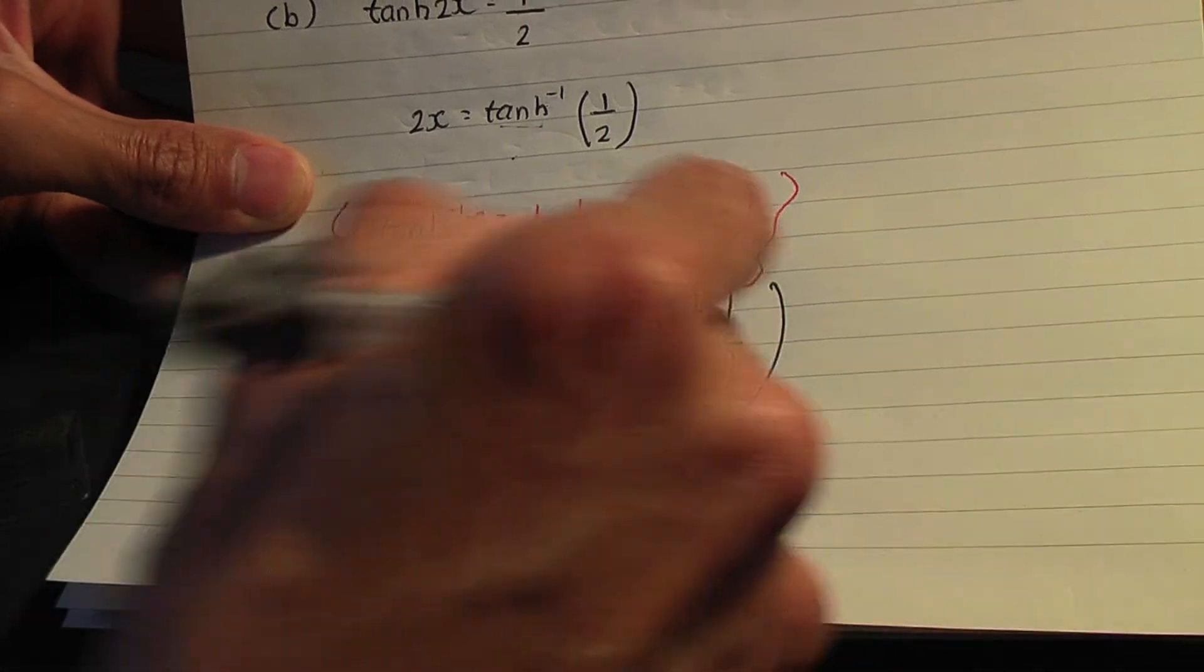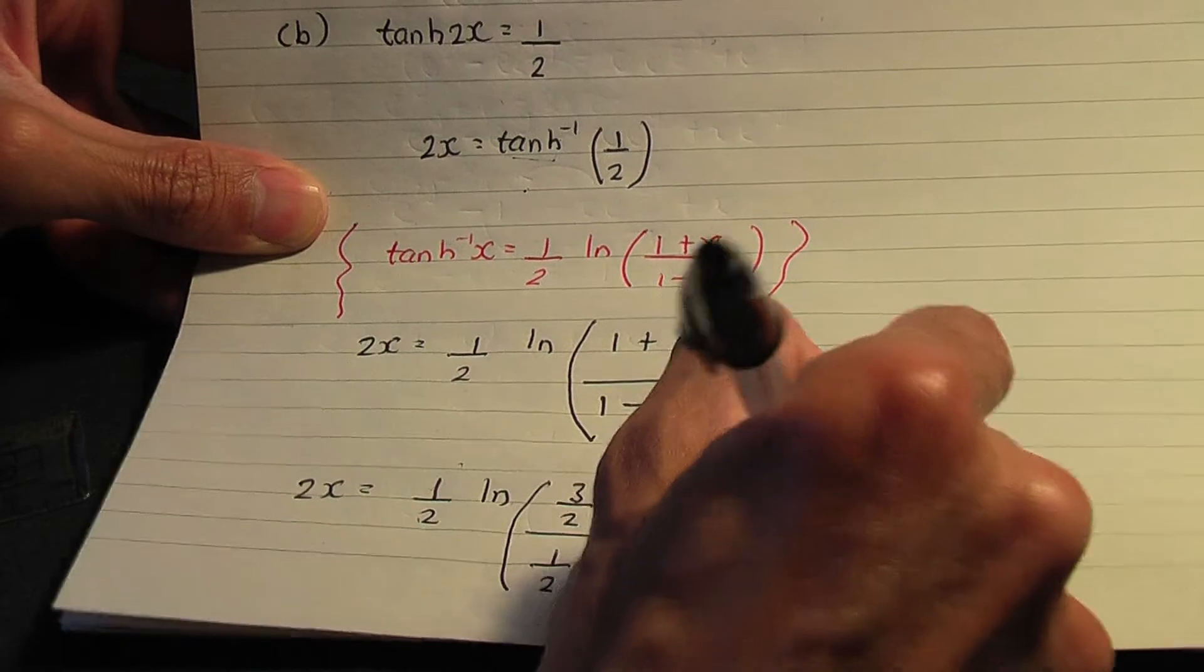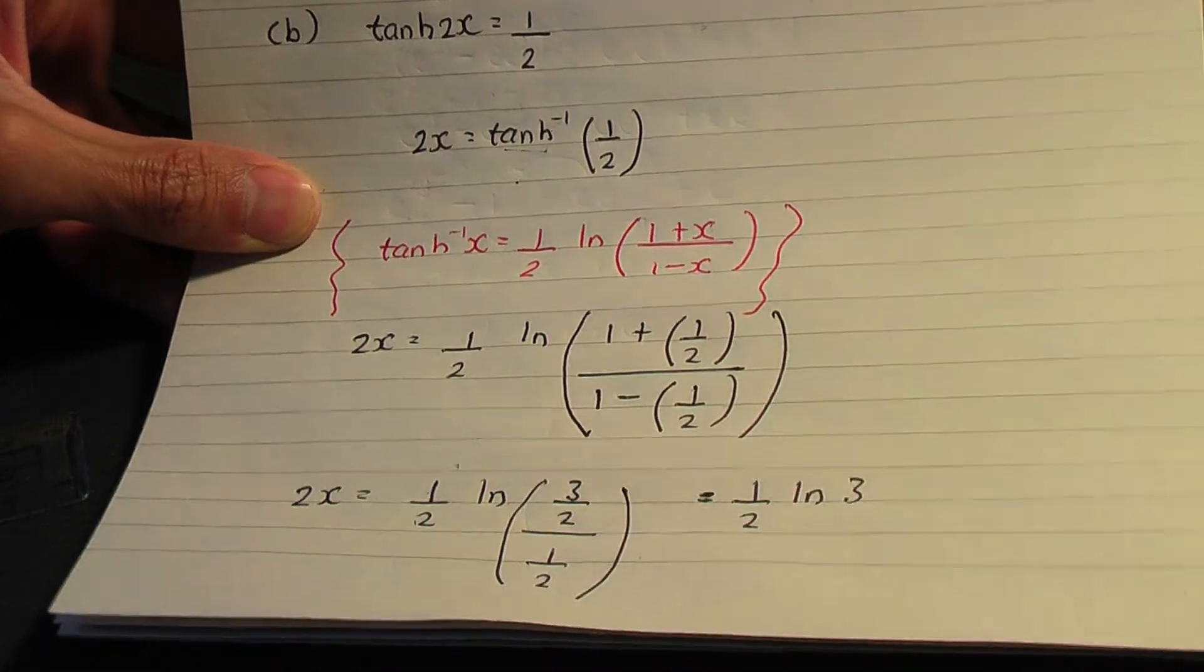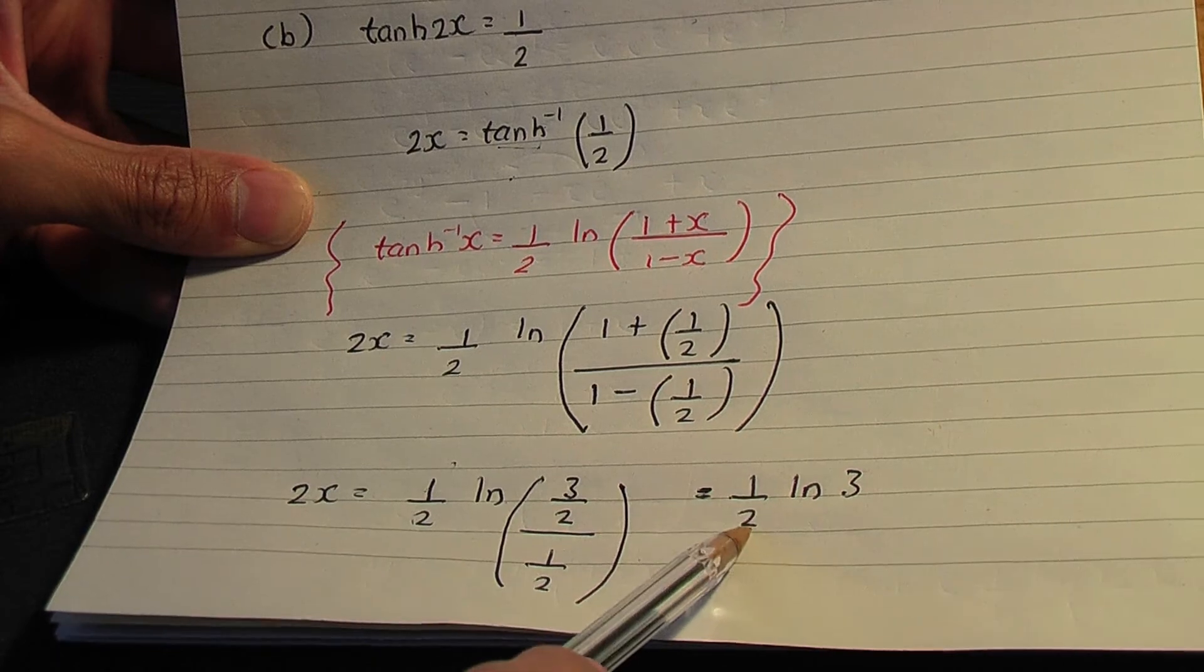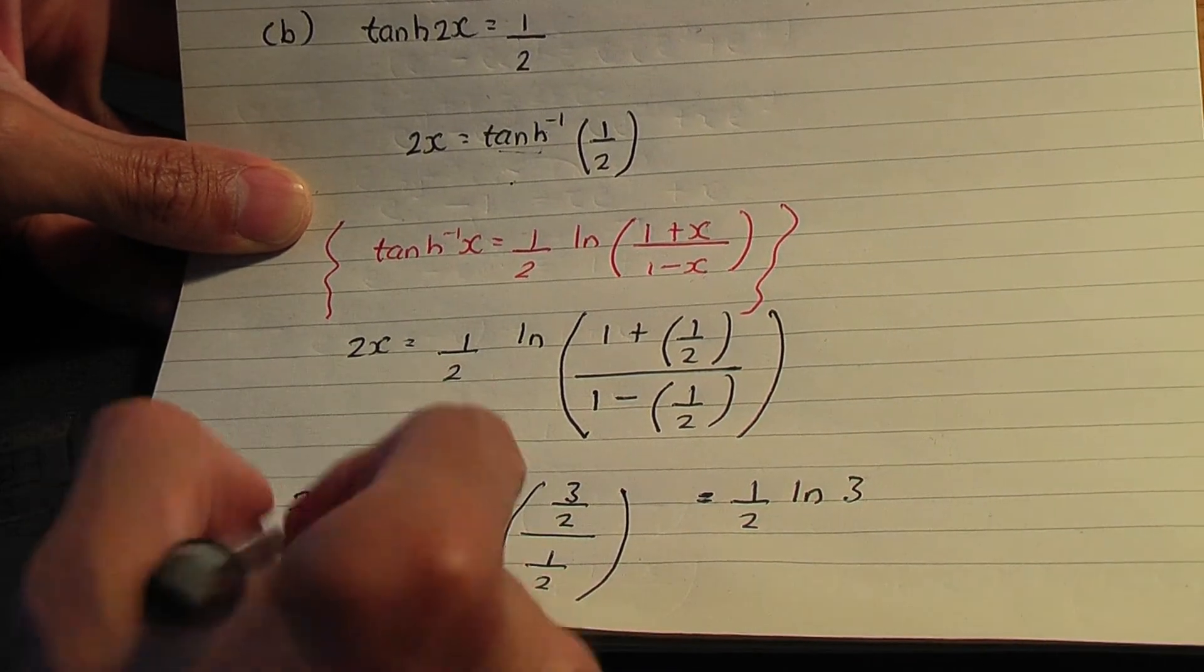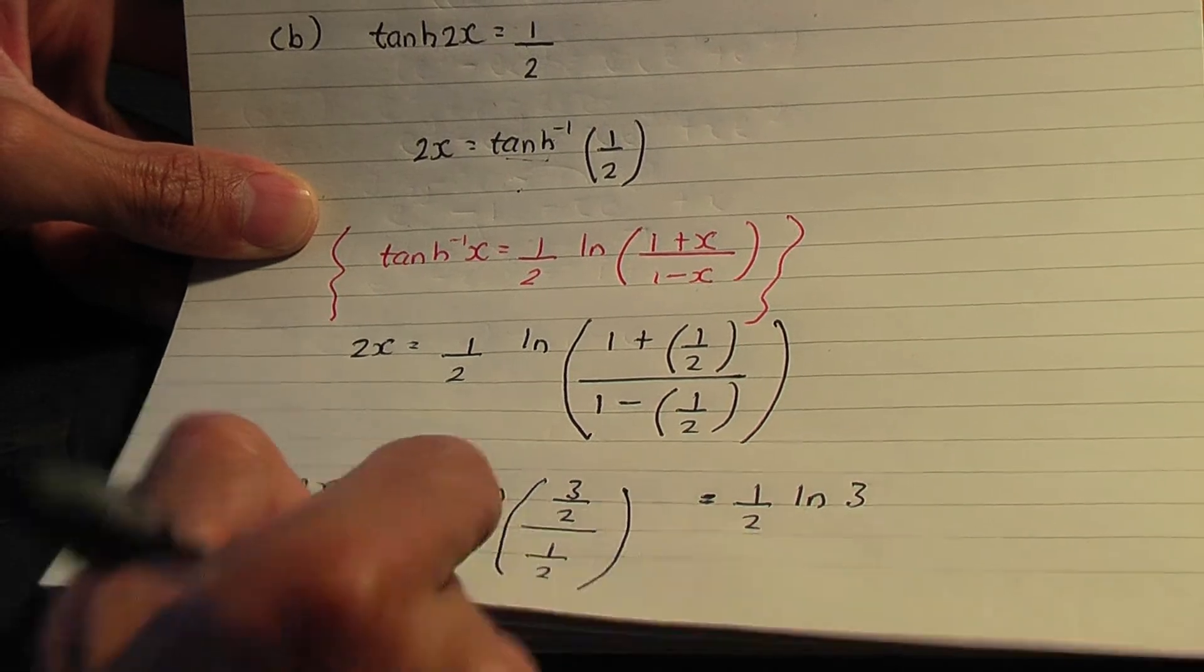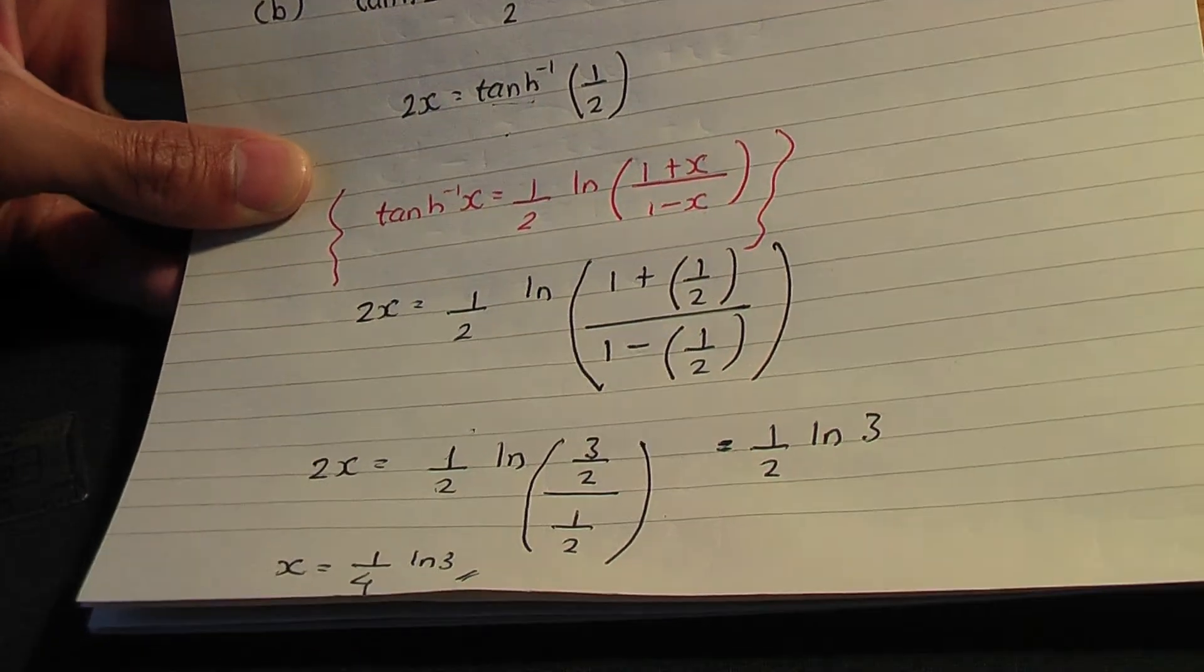If I continue along the line, that's the same as half ln, and 3 over 2 divided by 1 over 2 is 3. So 2x is equal to 1 over 2 or half ln 3. So we need x. If I divide both sides by 2, x will be 1 over 4 ln 3. I'll leave my answer like that.